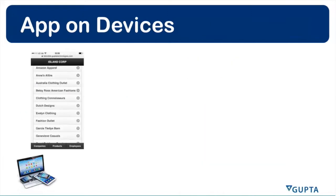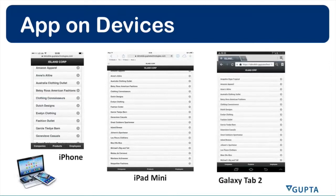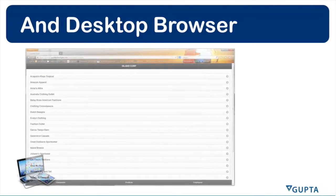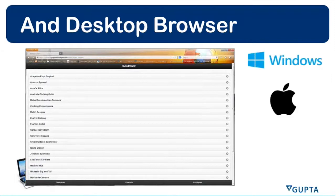Here are a few screenshots of how a simple app can look on a smartphone. This is a screenshot from an iPhone running one application — a list view coming from a database. The same thing looking like this on an iPad Mini, and the same thing on a Samsung Galaxy Tab. These browser-based applications also run on desktop browsers, so you can support your Windows users, Mac users, and even Linux users.